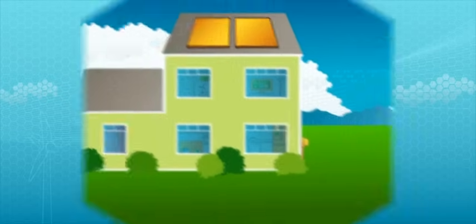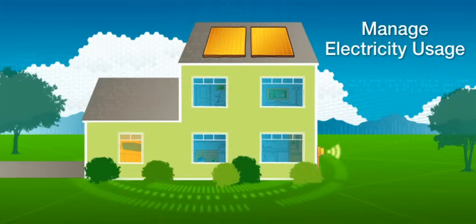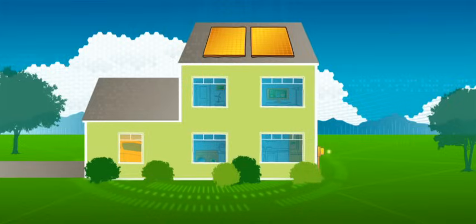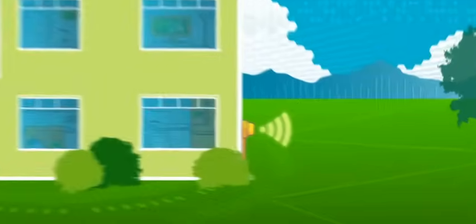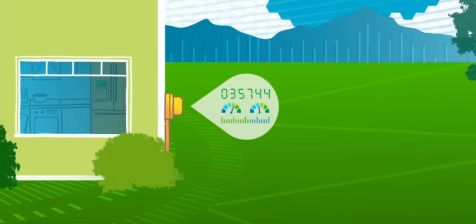The smart home communicates with the grid and enables consumers to manage their electricity usage. By measuring a home's electricity consumption more frequently through a smart meter, utilities can provide their customers with much better information to manage their electricity bills.